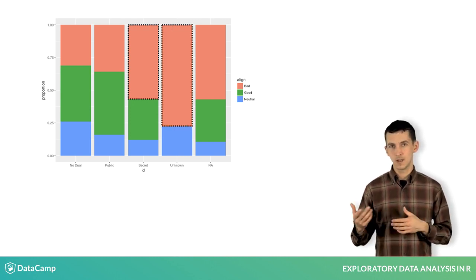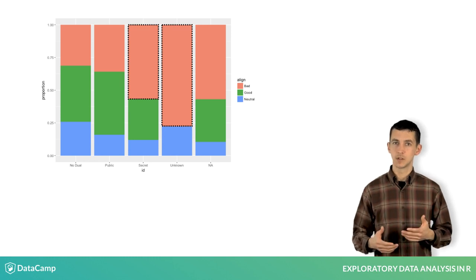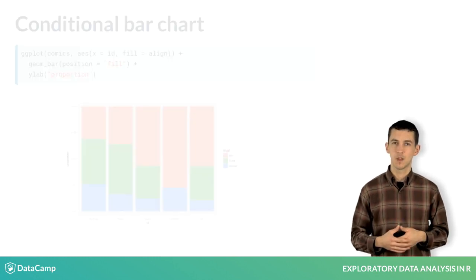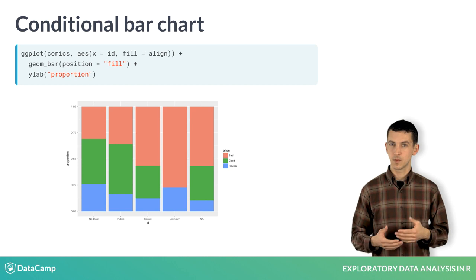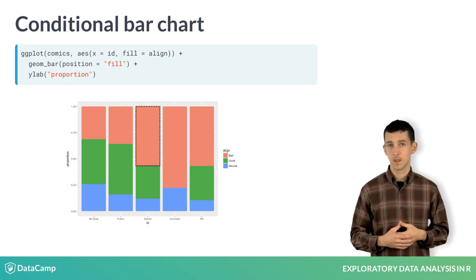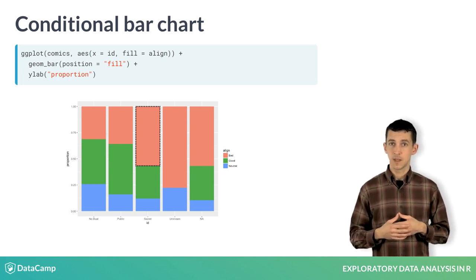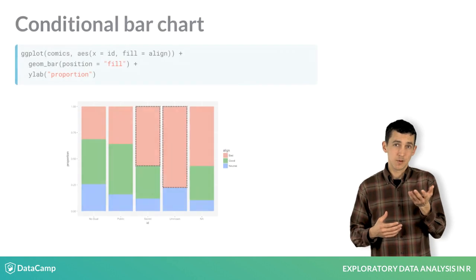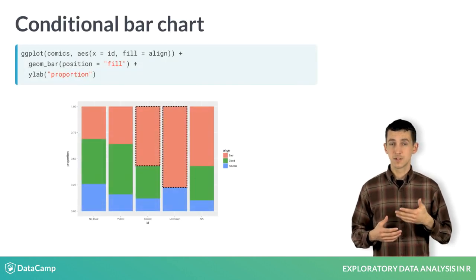Let's add one additional layer, a change to our y-axis to indicate that we're looking at proportions. When we run this code at the console, we get a plot that reflects our table of proportions after we had conditioned on ID. While the proportion of secret characters that are bad is still large, it's actually less than the proportion of bad characters and those that are listed as unknown.